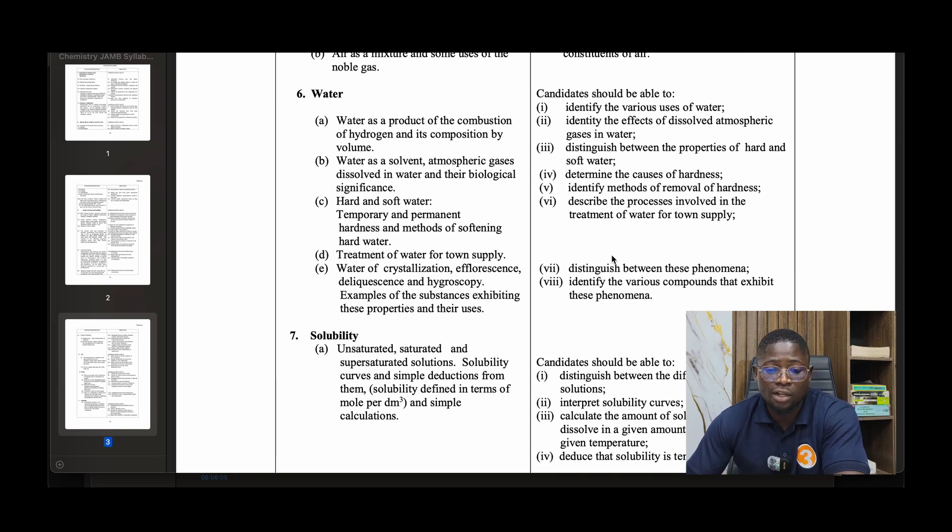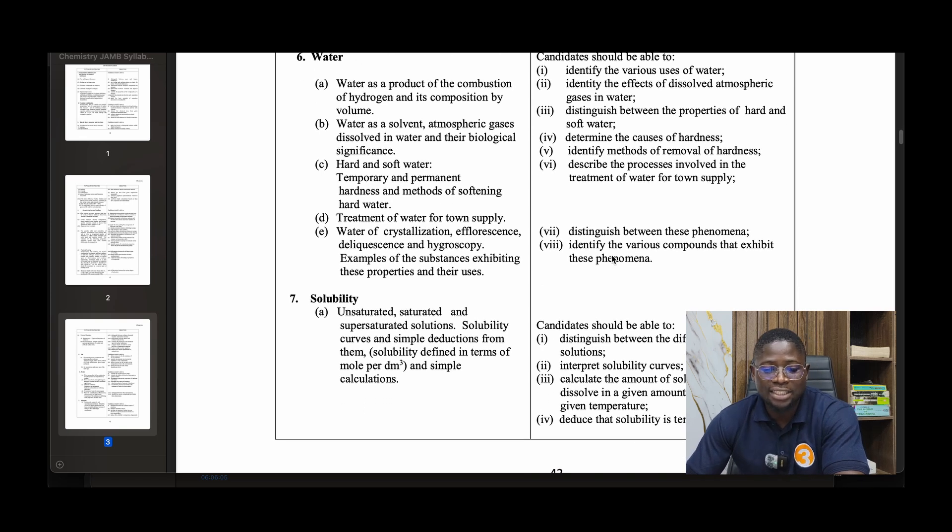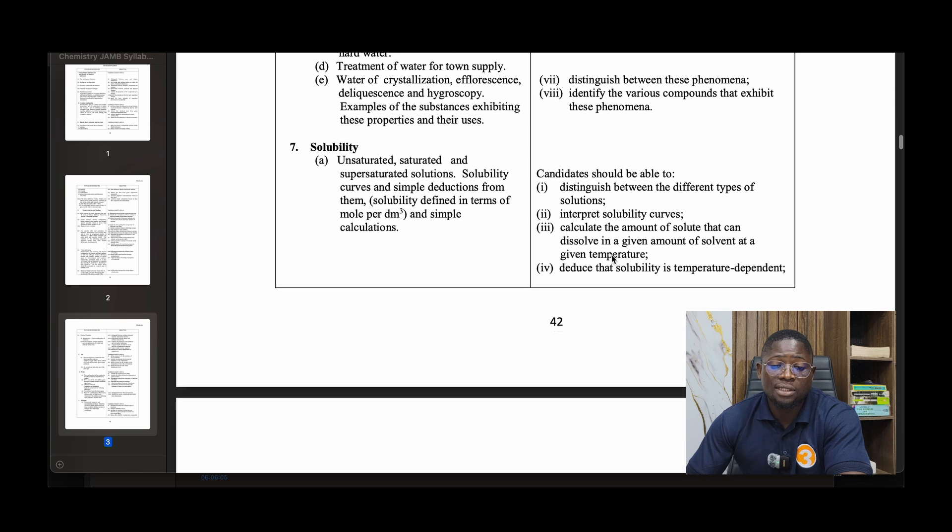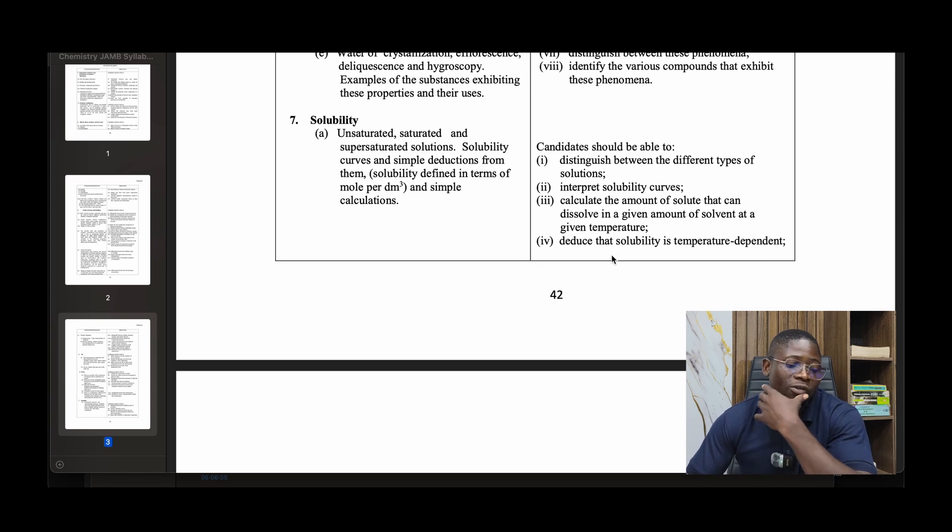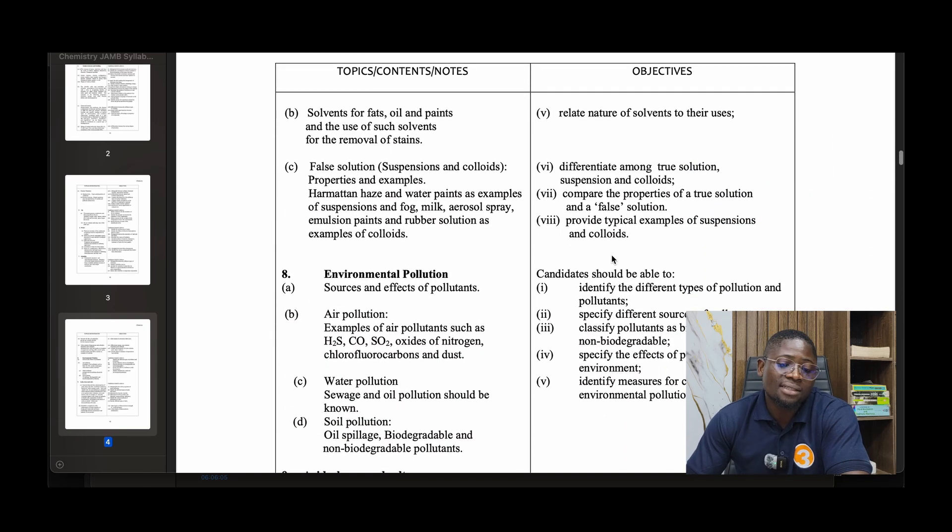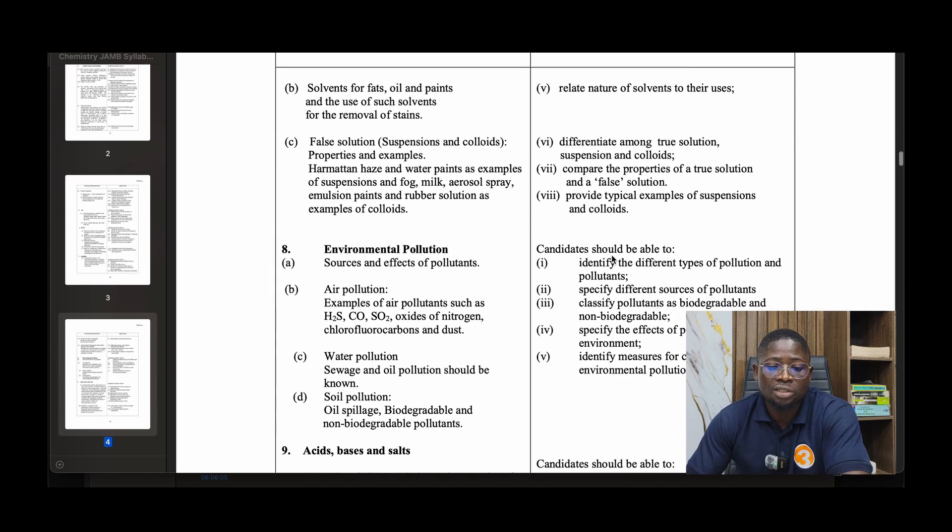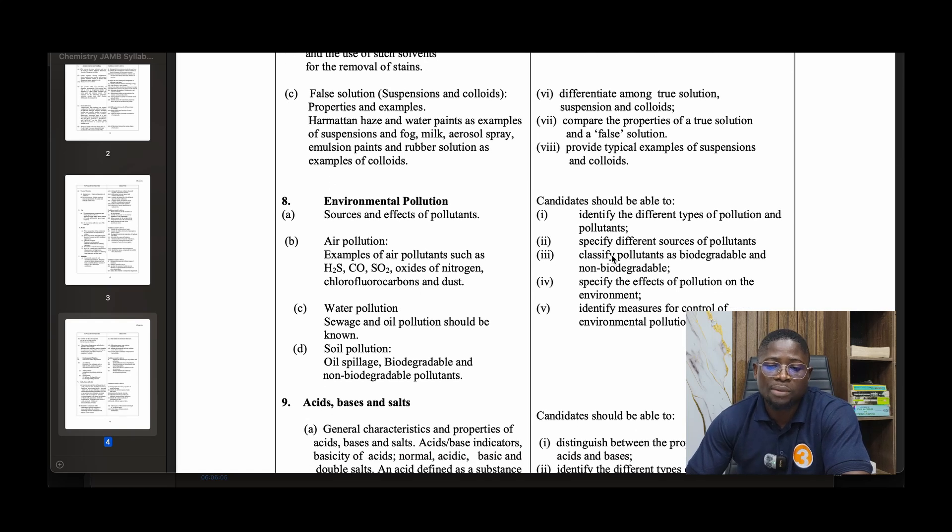Water as a solvent, hard and soft water, treatment of water, water of crystallization, efflorescence, deliquescence, and hygroscopy, and calculations. Examples of substances with these properties and their uses. Number eight: Solubility - unsaturated, saturated, and supersaturated solutions. Solubility curves and simple deductions from them. Solubility defined in terms of mole per dm³ and simple calculations. Solvents for fats, oils, and paints, and the use of solvents for removal of stains. False solutions, suspensions, and colloids, their properties and examples.